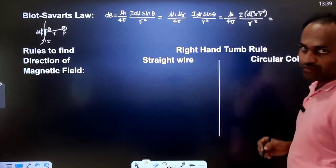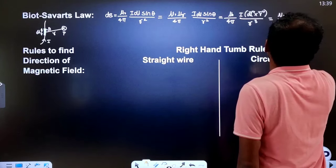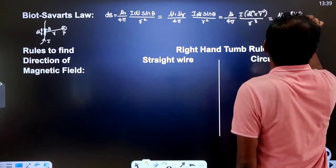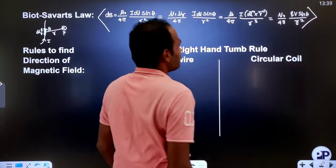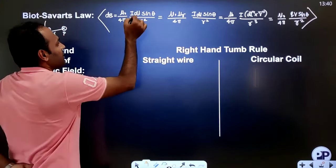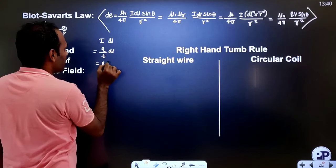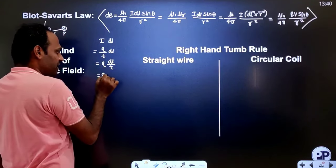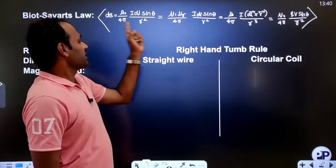One more form of Biot-Savart's law is in terms of charge and velocity: dB = μ₀/4π × qv sinθ / R². This comes from writing I as rate of flow of charge q/T, and DL/T as velocity v. So I·DL becomes q·v. These are the different forms of Biot-Savart's law.